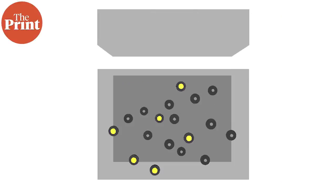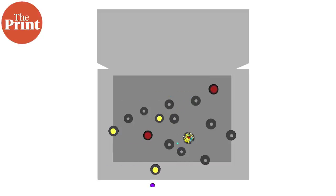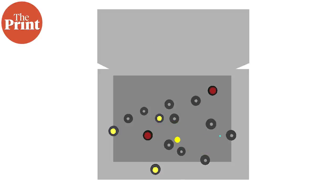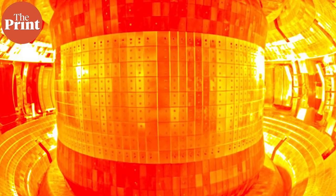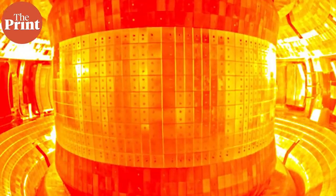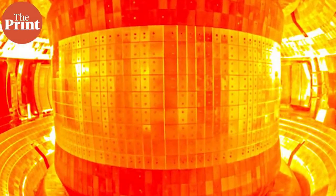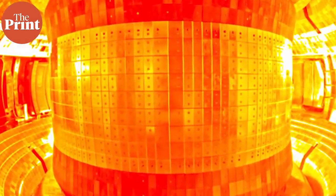Traditional reactors that we use today are fission reactors, where a heavy atom splits into two lighter atoms — more accurately, a heavy nucleus splits into lighter nuclei, releasing energy in the process. But in the fusion reactor that China used, energy will one day hopefully be generated by fusion, much like it is inside stars. Two lighter nuclei combine to form a heavier nucleus while releasing energy in the process. Therefore, the name artificial sun.